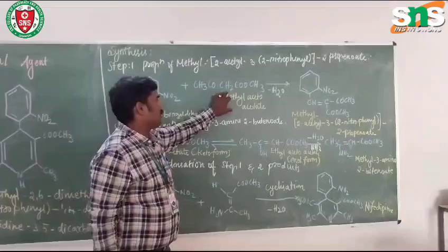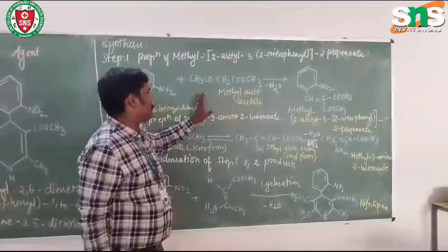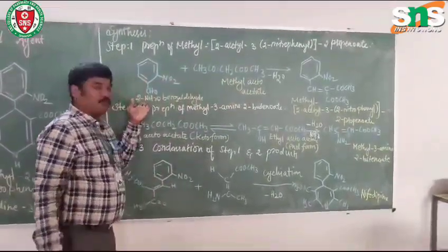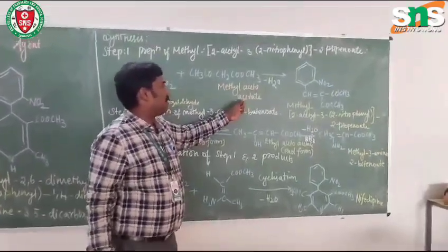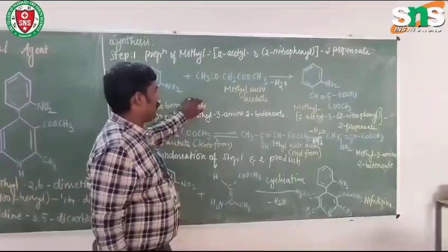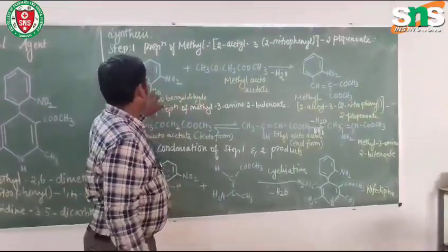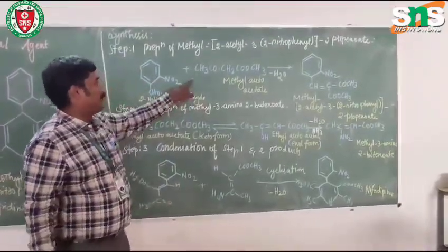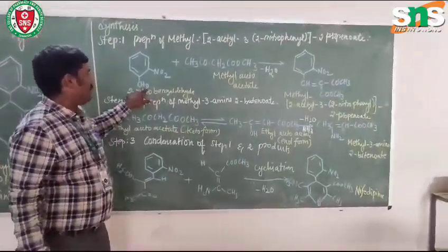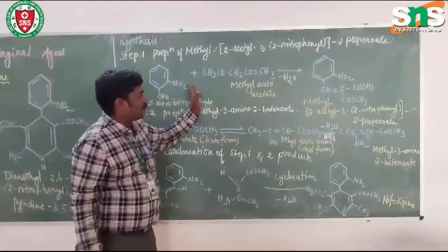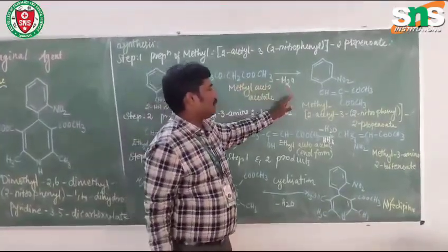And this is the reaction with ethyl acetoacetate, that is CH2-COO-CH2-COO-CH3. So 2-nitrobenzaldehyde reacting with the ethyl acetoacetate with the liberation of water molecules. See, already here oxygen is present, so the CH2 which will take 2 molecules of hydrogen and 1 molecule of oxygen, that will be eliminated as water molecules.